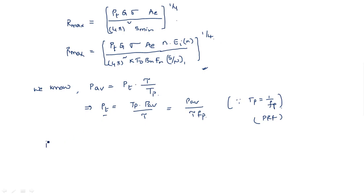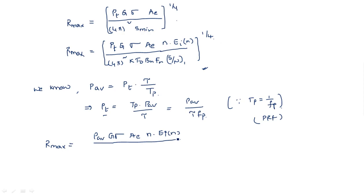Substituting P_t into the R_max equation gives: R_max equals P_average G sigma A_e N E_i(N) divided by 4 pi squared k T_0 B_n F_n times signal-to-noise ratio of one pulse, with P_t replaced by P_average divided by tau times F_p.